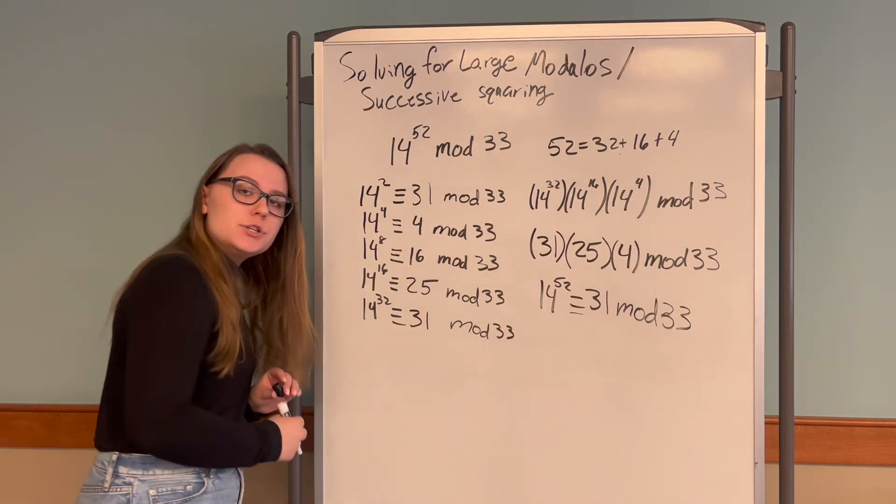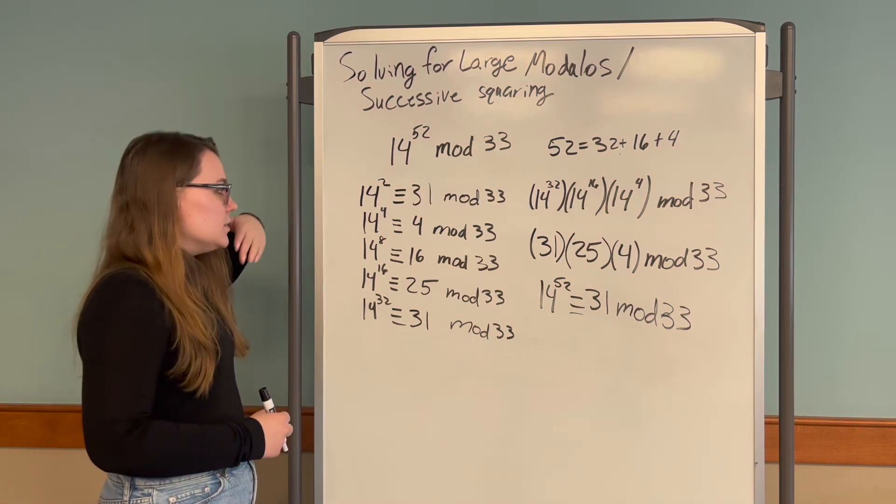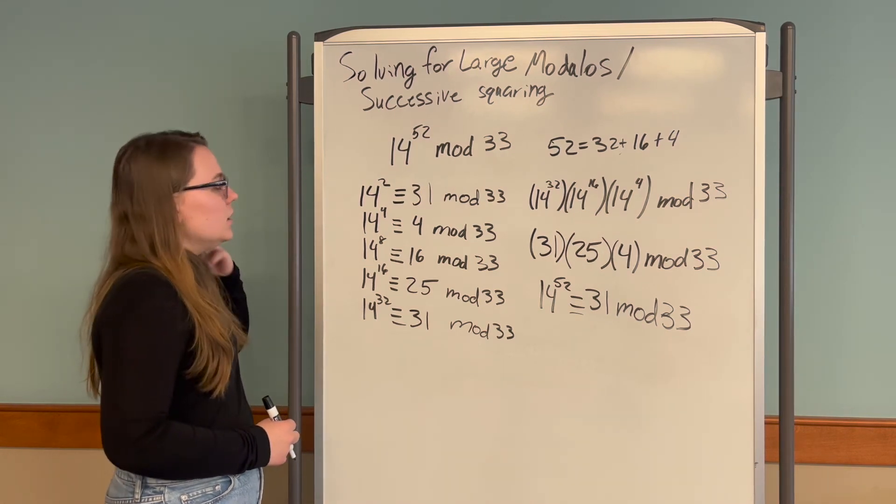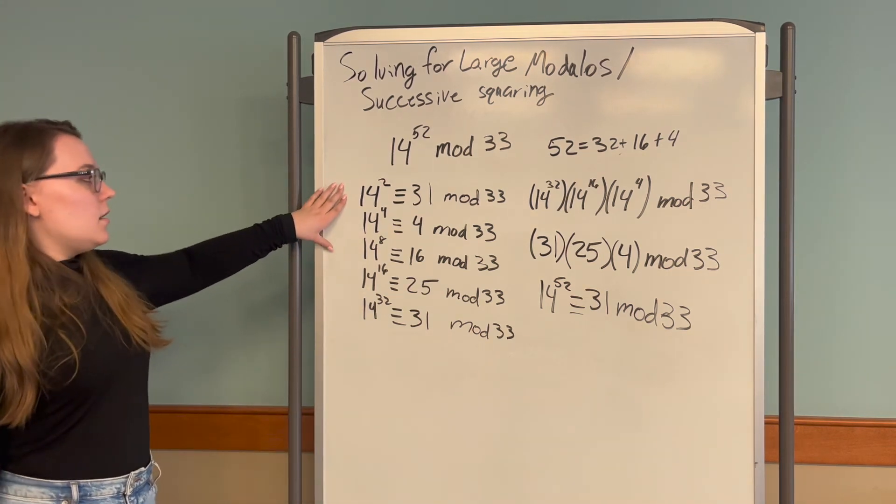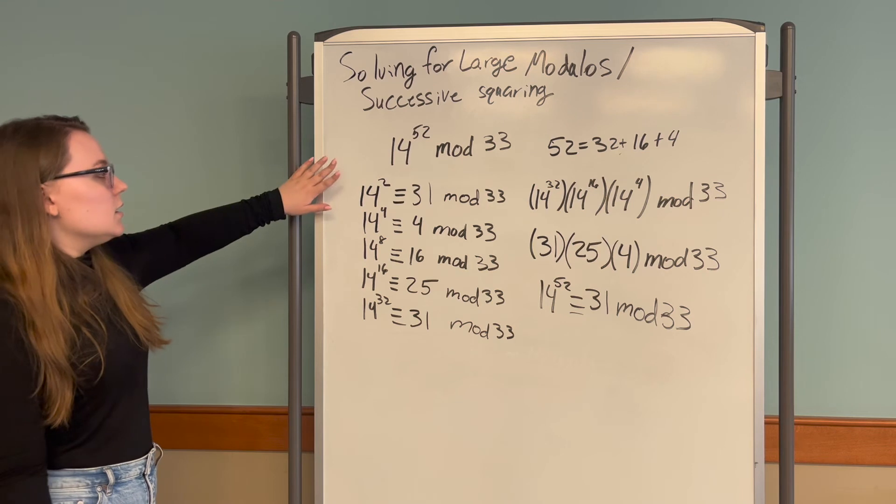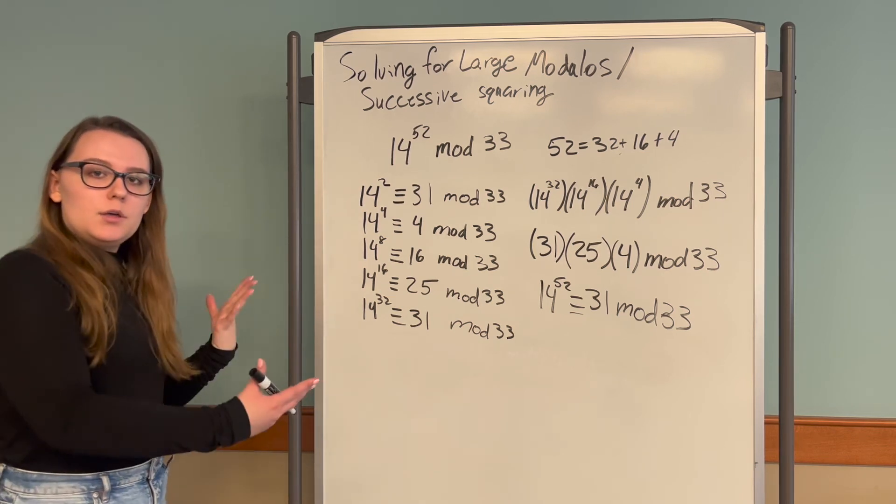You don't have to use the exponent 2 as your base. You could use any number you wish. For example, you could start with 14 to the 3 and compute that way, then square that. So we could get 14 to the 3, 14 to the 6, 14 to the 12, and compute it that way.